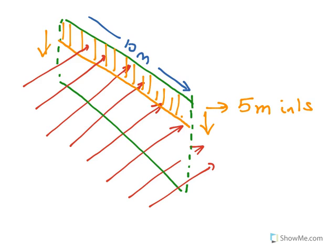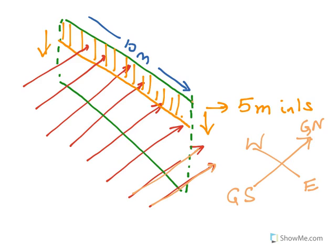Coming back to the question: there is a 10-meter long straight wire which is falling down. The Earth's magnetic field is shown — this is the north, east to west, and north and south. The geographic north and geographic south are indicated, with the magnetic north and magnetic south in their respective directions. The magnetic lines of force run in this direction, and the conductor is perpendicular to the magnetic north-south. As the conductor falls down, we can assume a closed loop formed by dotted lines and a horizontal line on the surface of the Earth — this is an imaginary loop we consider while solving.